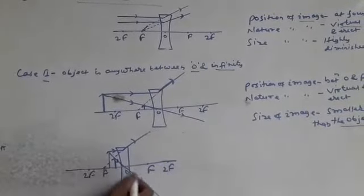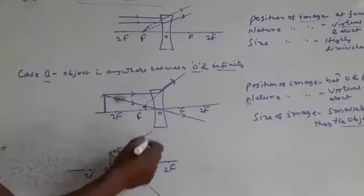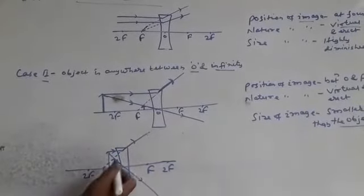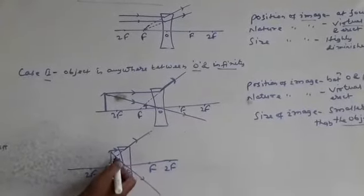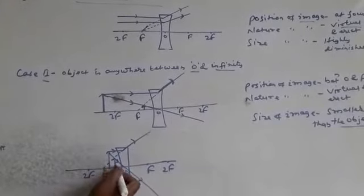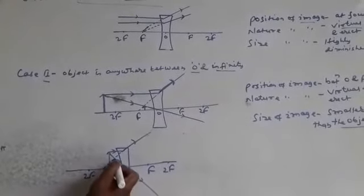Second ray is taken. From optical center, it will go straight. No chance to meet anywhere. That's why we have to produce this ray backward. Once again you are seeing here. Both the rays intersect here.